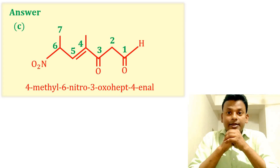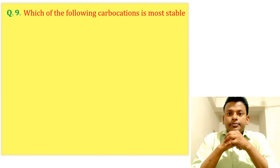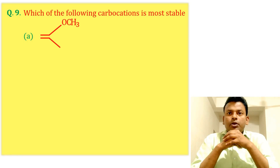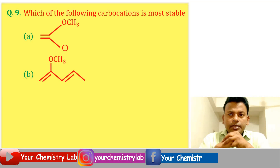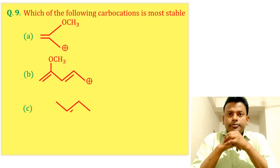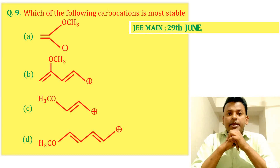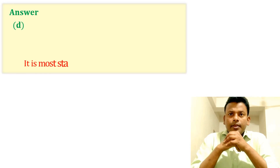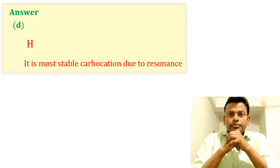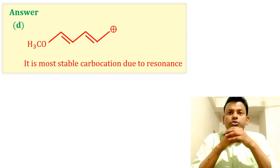Question 9: Which of the following carbocations is most stable? This question was set in JEE Main 29th June 2022 Evening Shift. Answer: Option D is correct — it is the most stable carbocation due to resonance.